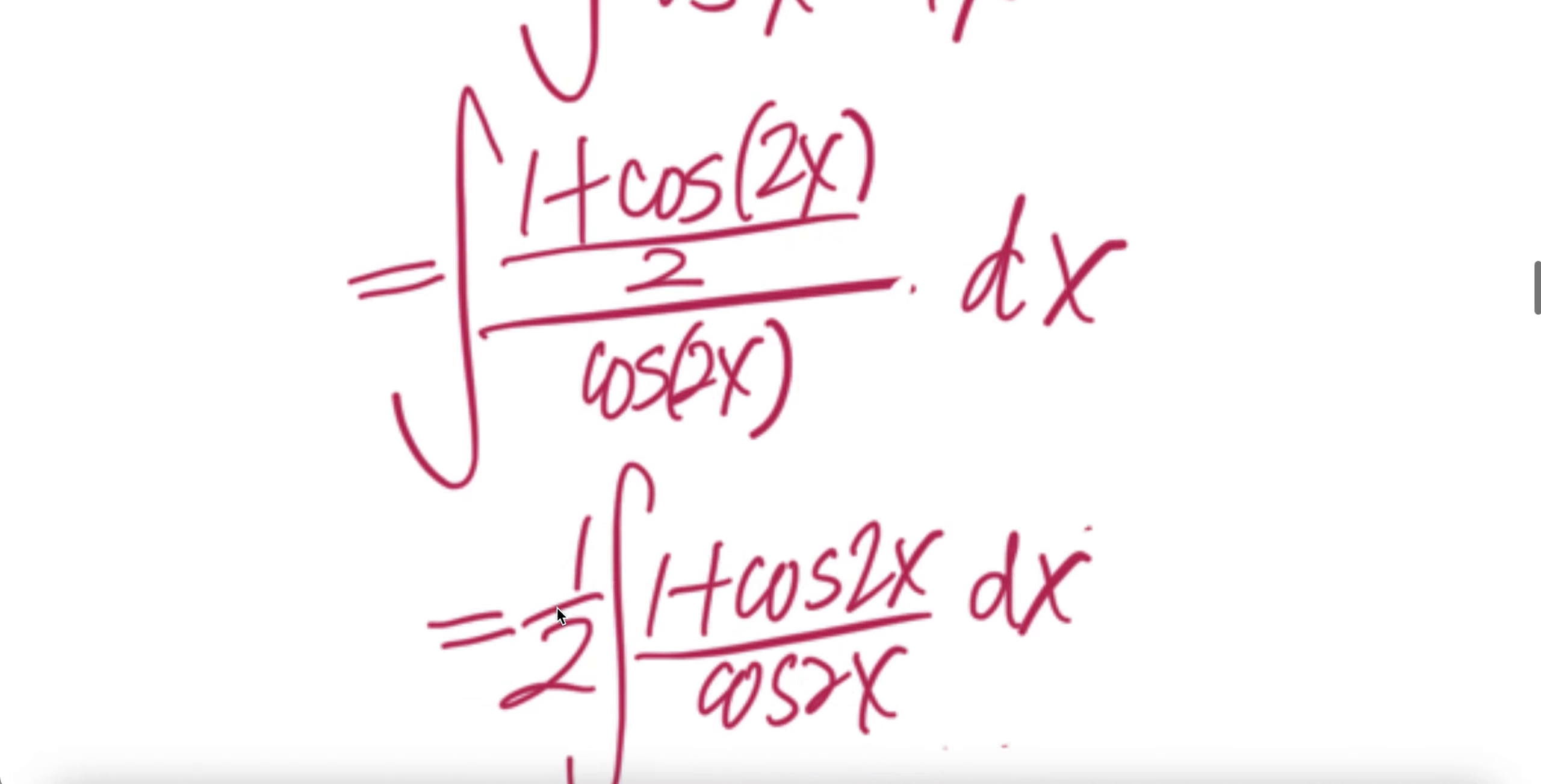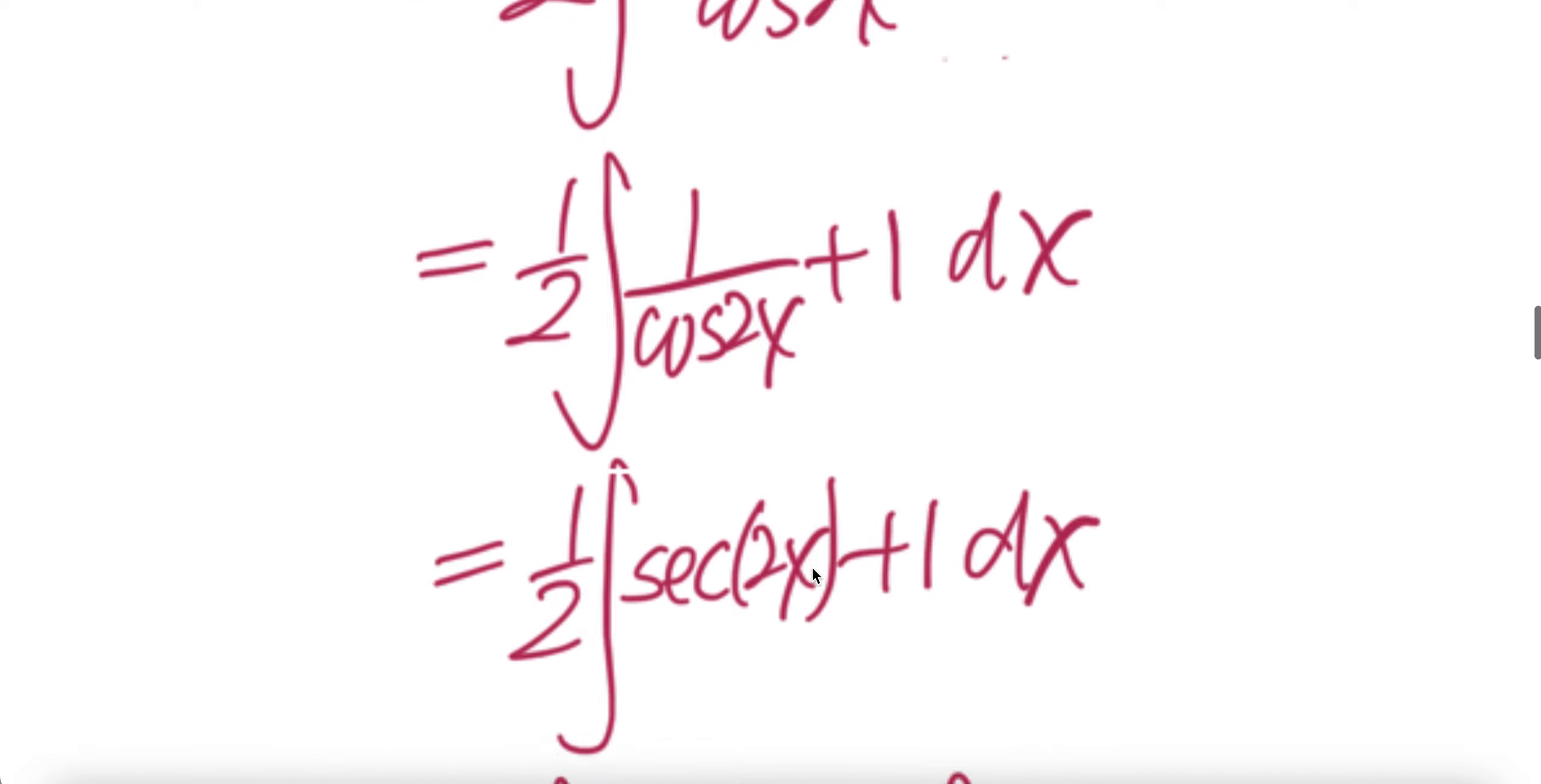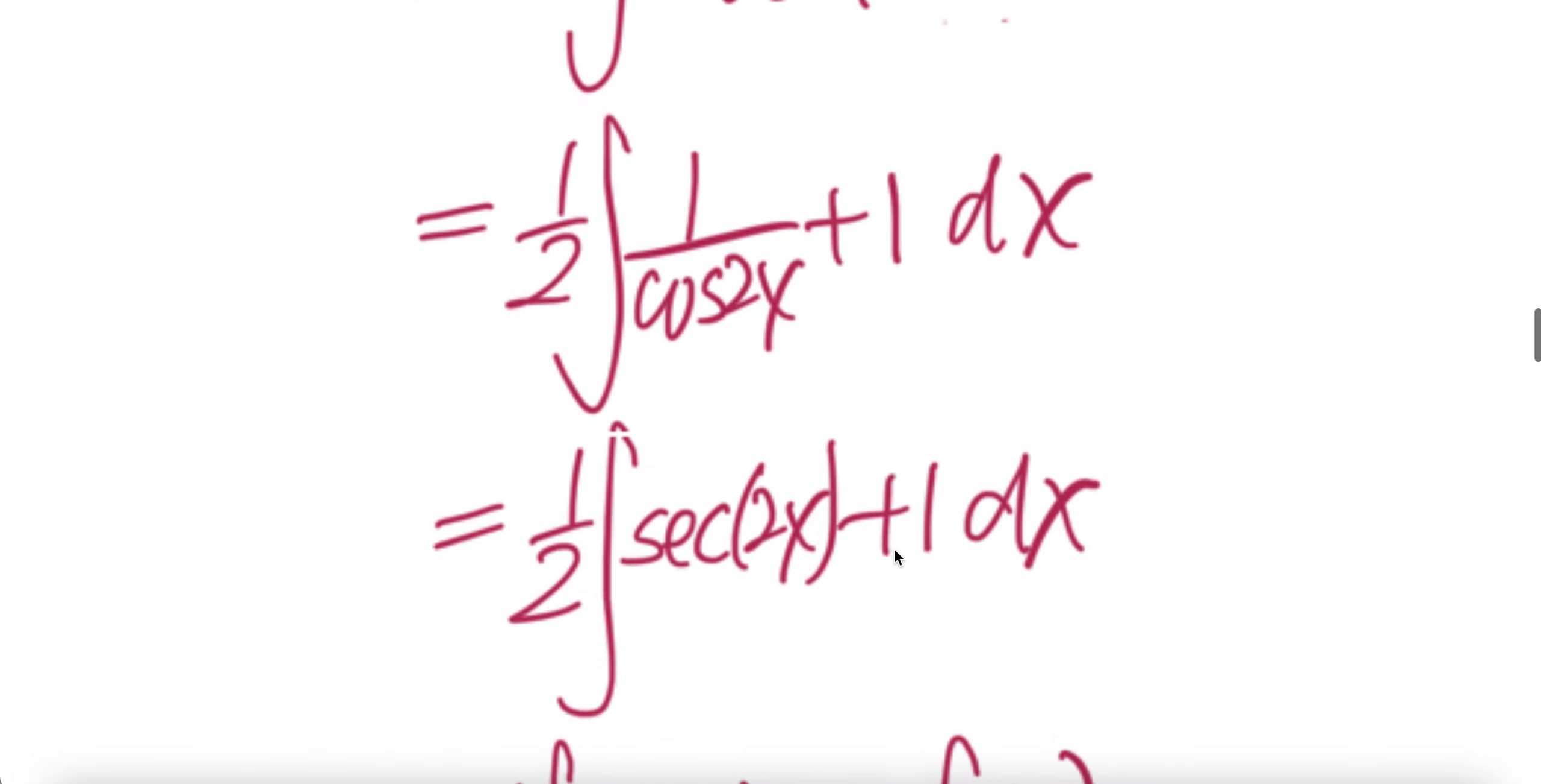Half out of the integral and then you have integral of 1 plus cos 2x divided by cos 2x. Now there are two terms, one term and a second term. First term, 1 over cos 2x. Second term, cancel, you get 1. Write this as sec 2x plus 1.